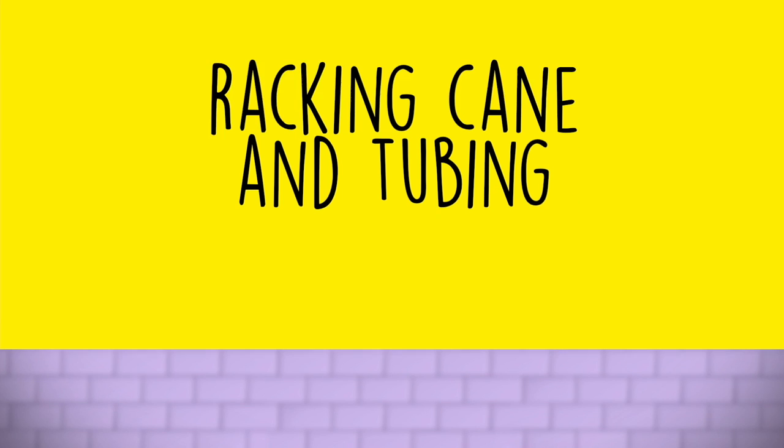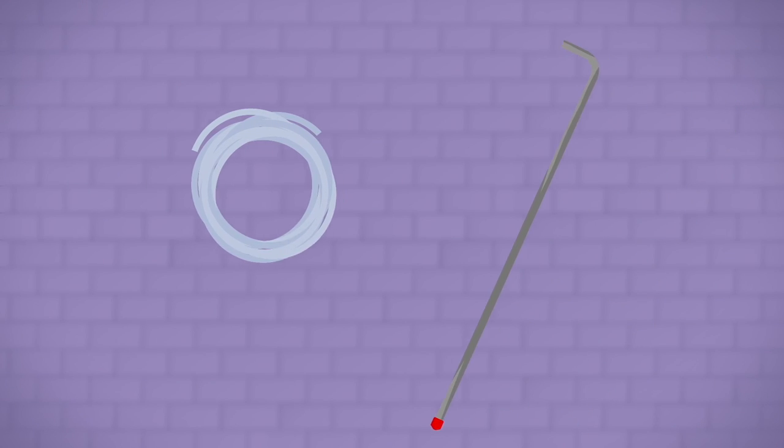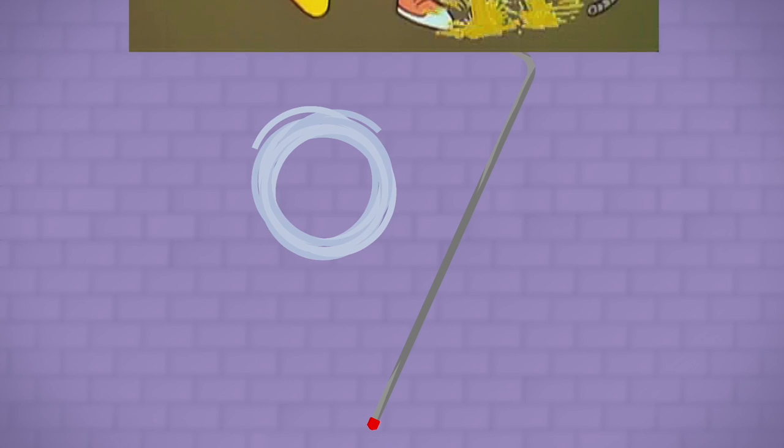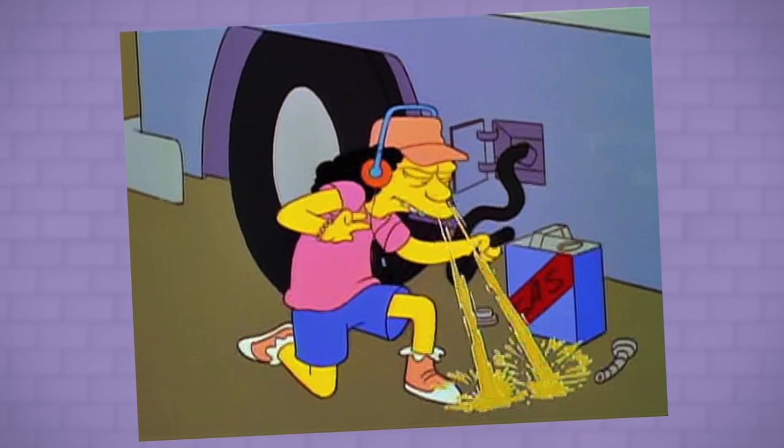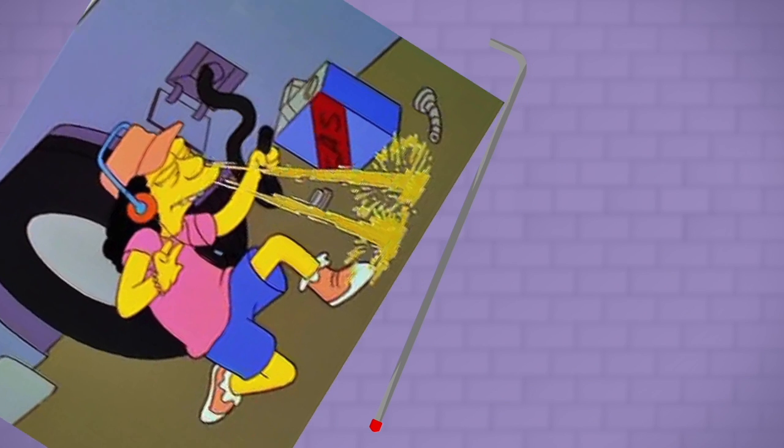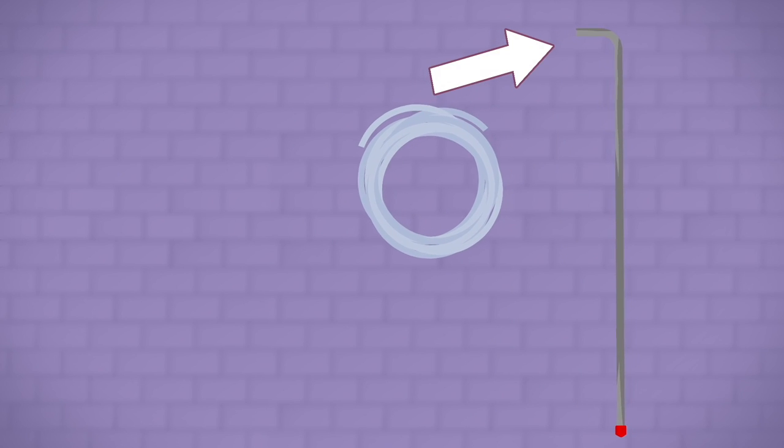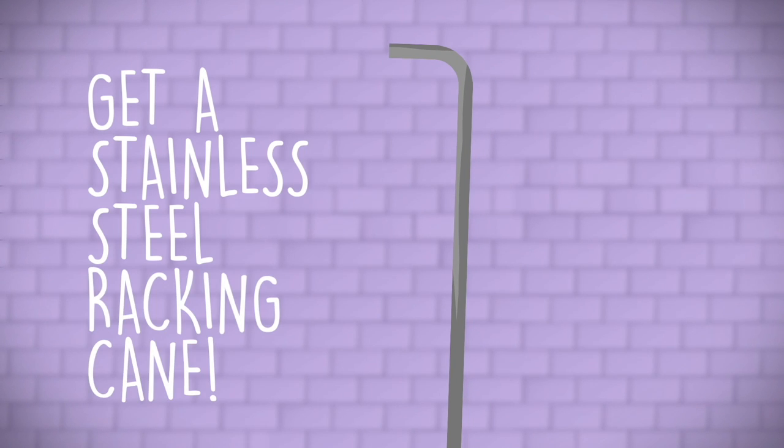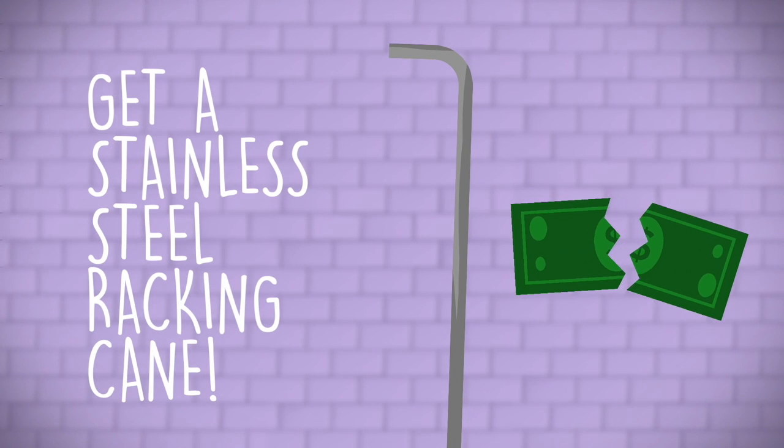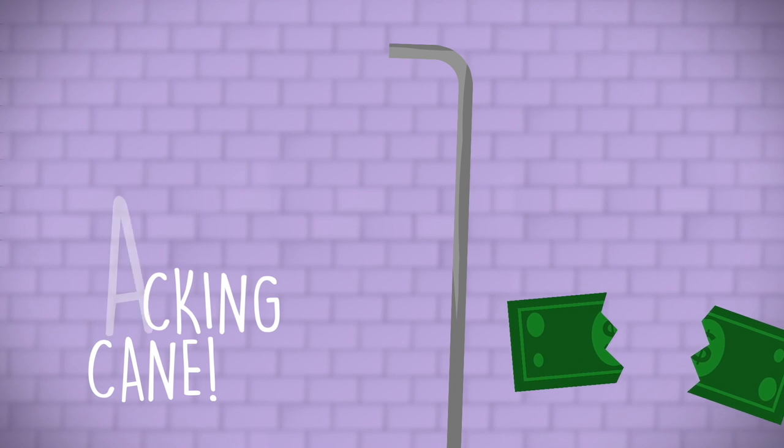Racking cane and tubing. Your racking system is how you get your brew from one container to the next. Remember the old TV shows where somebody would siphon gasoline from a car? It's the same idea. The racking cane is a rigid tube that clips onto your brewing vessel. The tubing, typically medical-grade plastic tubing, attaches to the top of the cane. Don't skimp here. Get a stainless steel racking cane. I've blown through enough plastic ones early on to have more than paid for stainless.